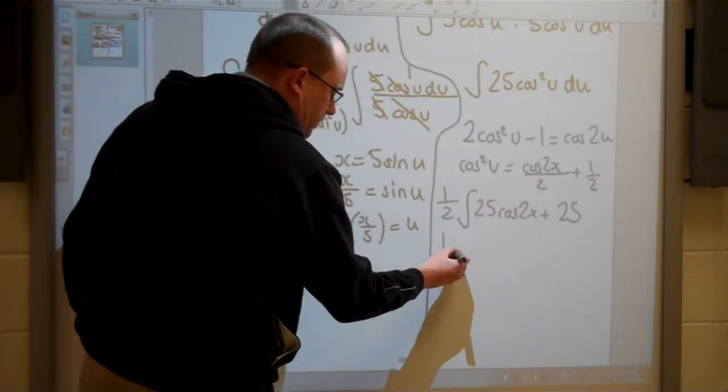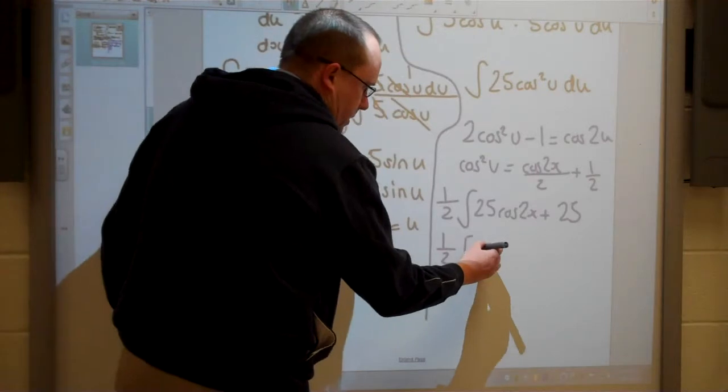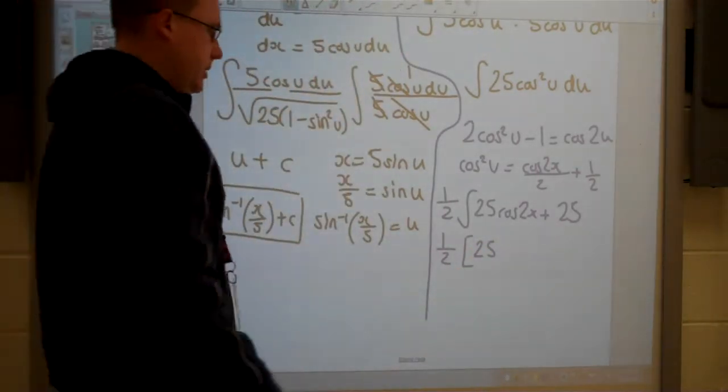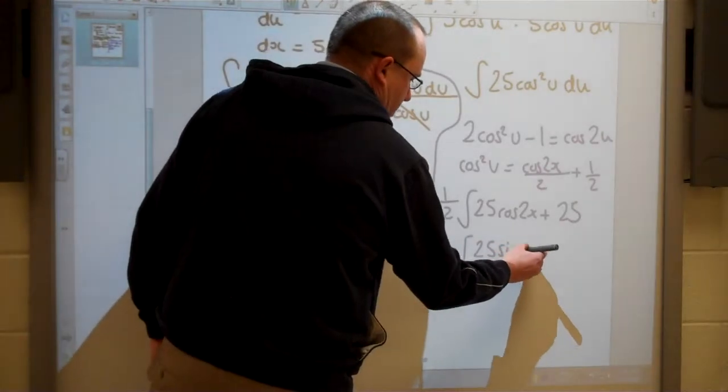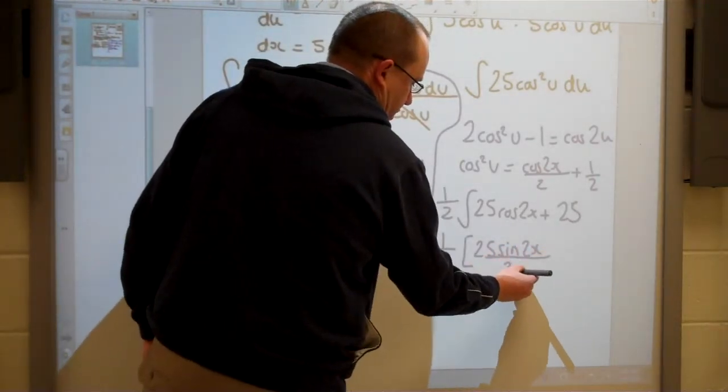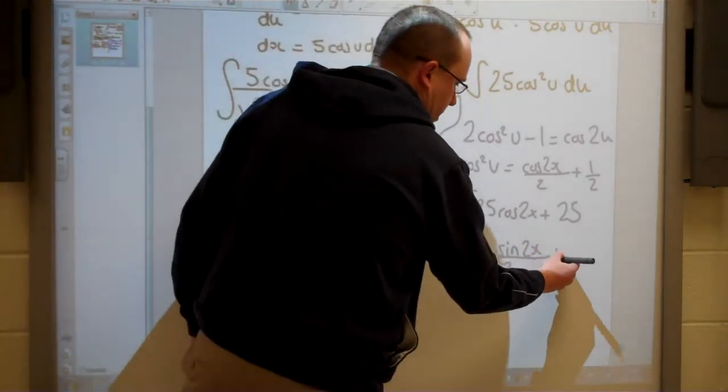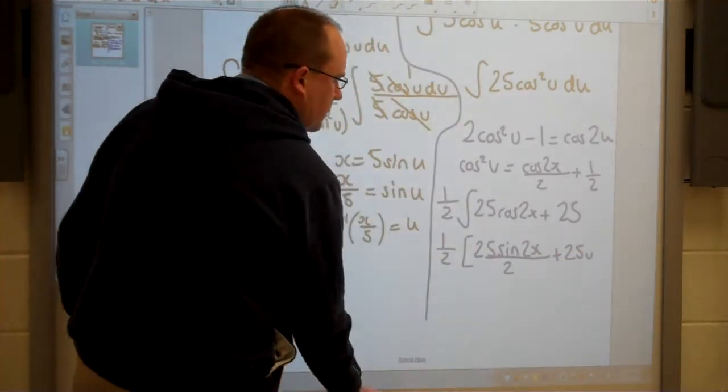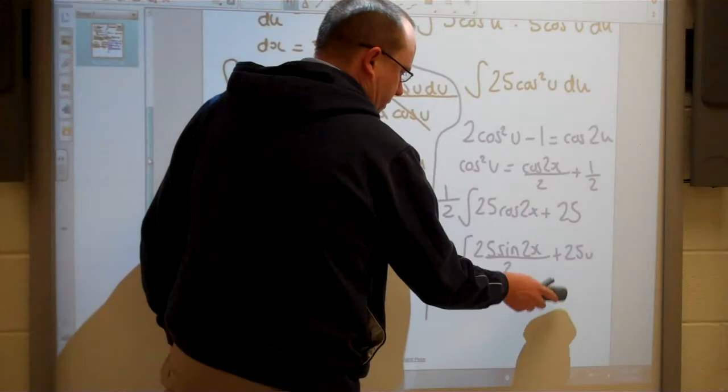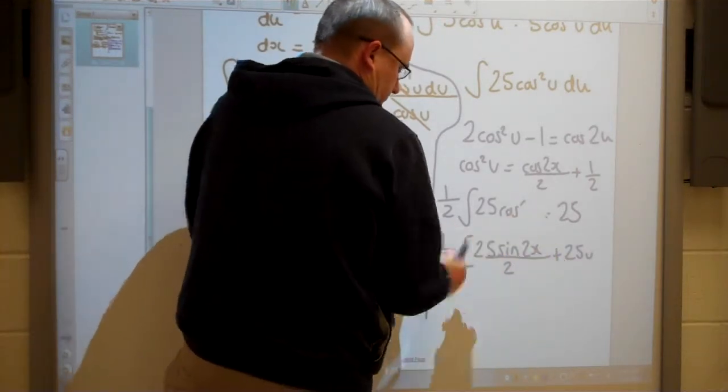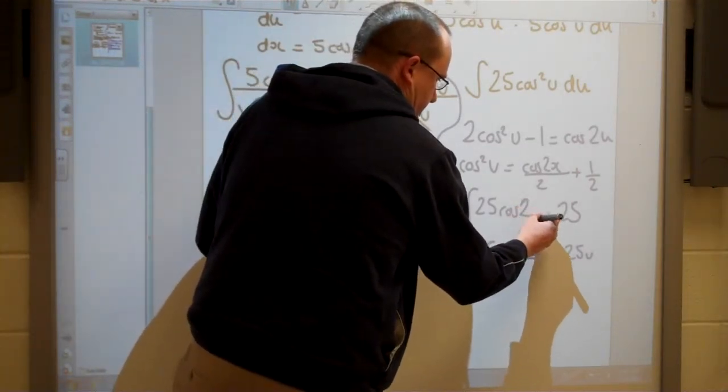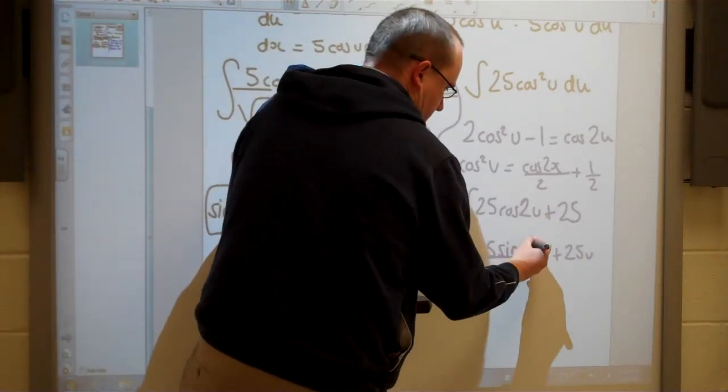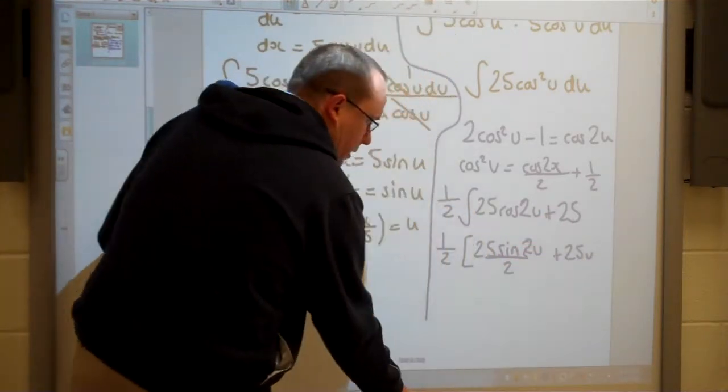So if I do my integral, the integral for cosine 2x is sine 2x over 2, which is also on your formula sheet. And the integral for 25 is just going to be 25u. Now you should be very careful with doing this. This is still in terms of u right now. So let me quickly go back and fix this. There we go, that's better.